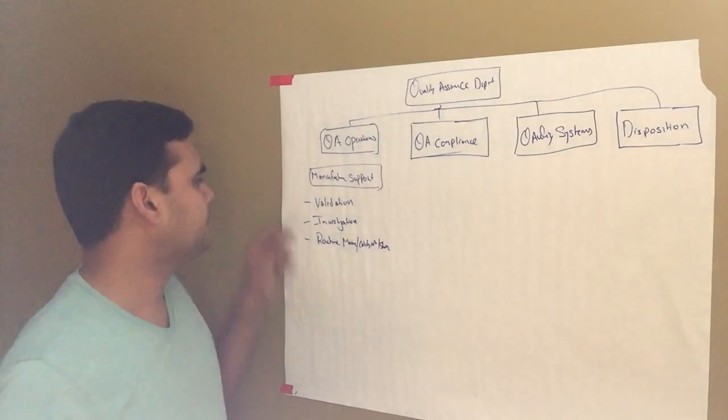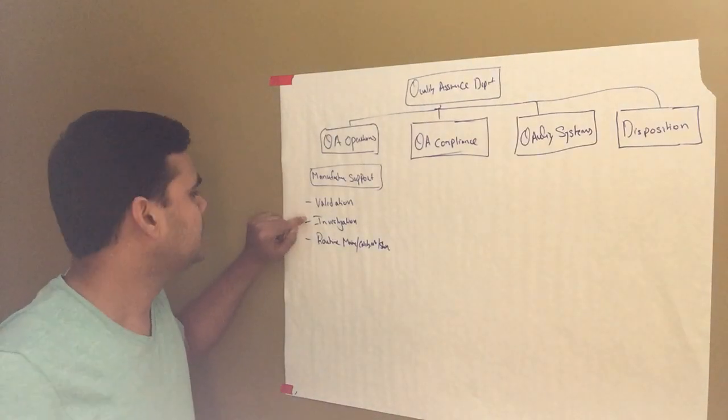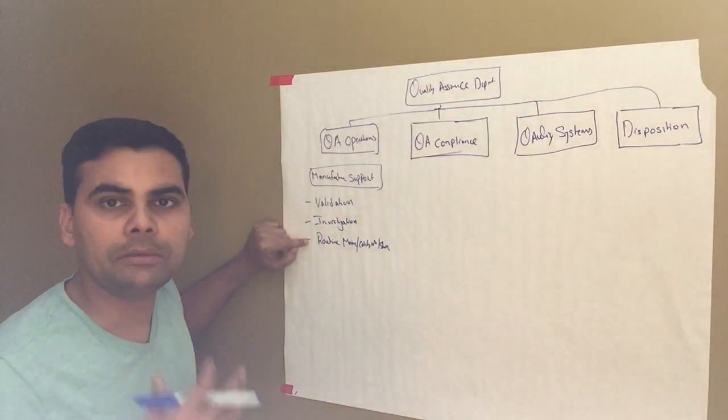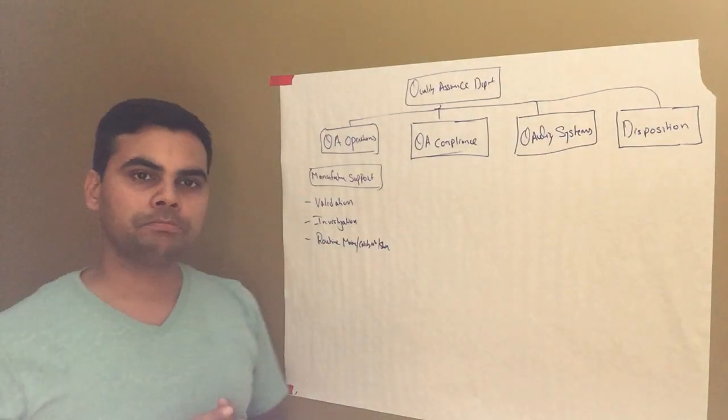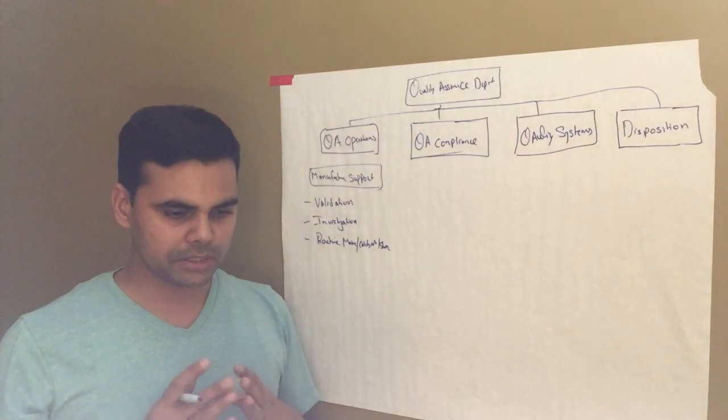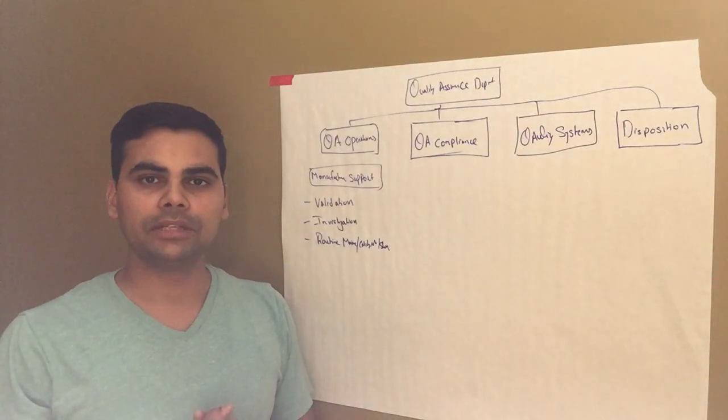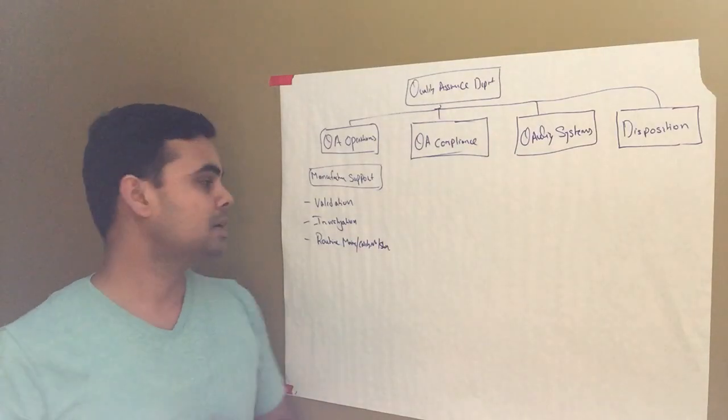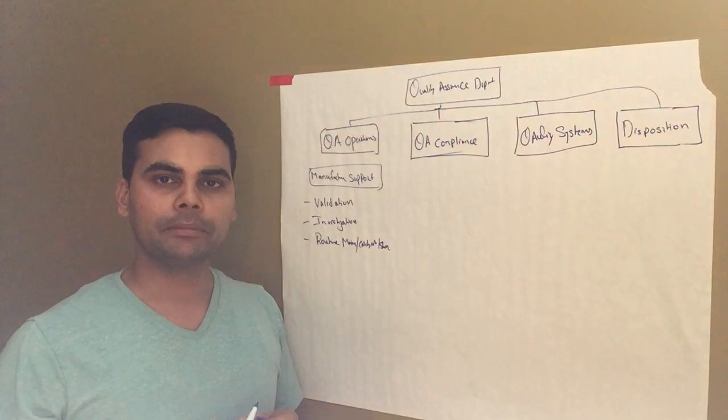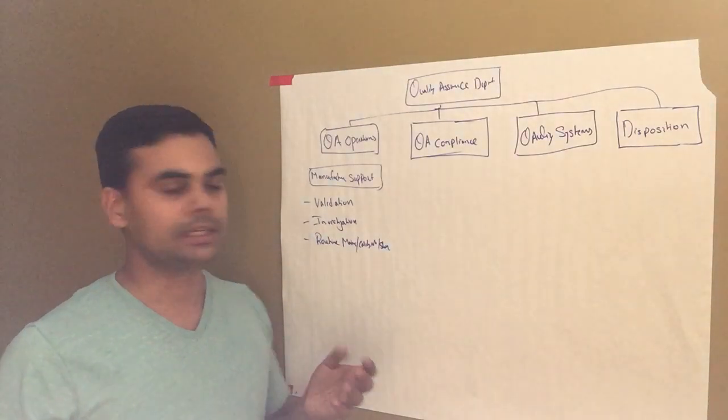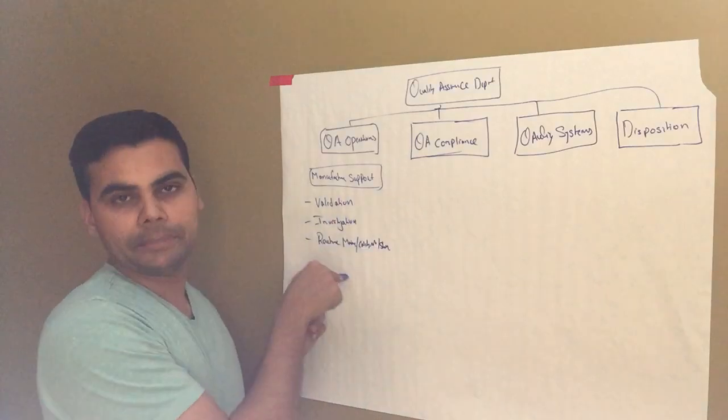So you will be helping them in validation activities, you will be helping them in investigations activities, you will be helping them in routine maintenance of equipment. Let's say every six months we perform this preventive maintenance of the equipment, so that we can consistently have them produce the right results and have our instrumentation and engineering department come and help us out in bringing the best out of a machine.